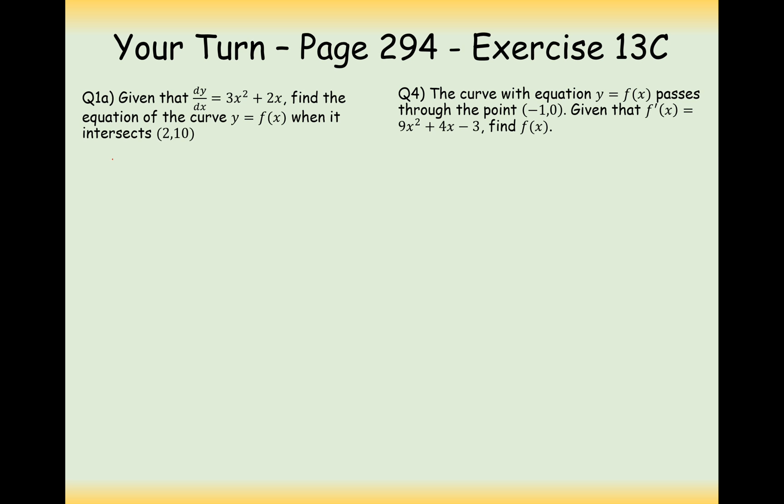So the first thing we need to do here is if we're given dy by dx, we can work out y by integrating. So this is going to be x cubed plus x squared, increasing power by 1, divided by new power, plus c. And we're also told it goes through the coordinate (2, 10). So in this case here, we plug 10 into the y coordinate and 2 into the x coordinate, and we plus c. And then we work out that c here needs to be minus 2. So our final answer here is going to be x cubed plus x squared minus 2.